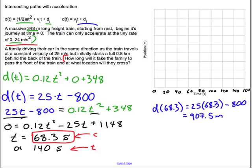And as a check you can always do that in the other equation as well. I'll do it just this one time. So this checks to make sure our equations are at least good. So d of 68.3 is now also going to be equal to 0.12 multiplied by 68.3 squared plus 348. Okay and aside from some small rounding errors I definitely get the same thing. So I'm happy with my functions.